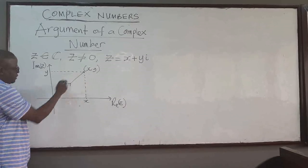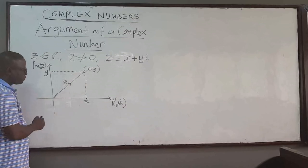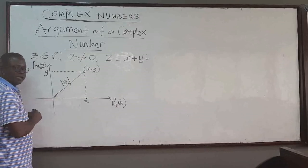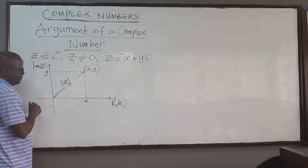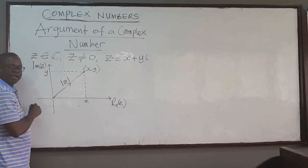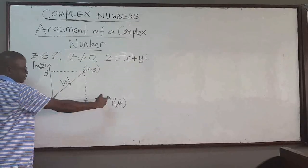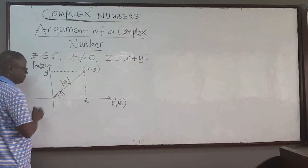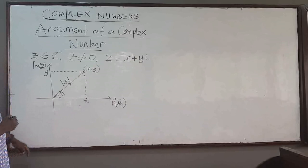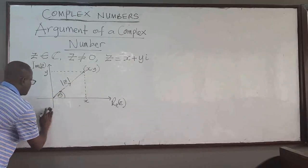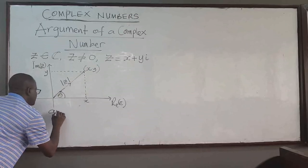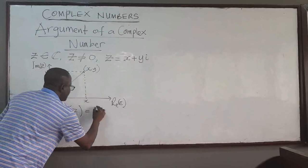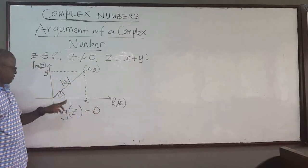The vector z goes from 0 to the point. If it's a vector, we know there is a modulus of the vector. The argument of z is the angle of inclination of z from the real axis. If I measure from the real axis, this angle here — let's call it theta — theta is referred to as the argument of z, denoted as arg(z). It is this angle theta, which is measured from the real axis.